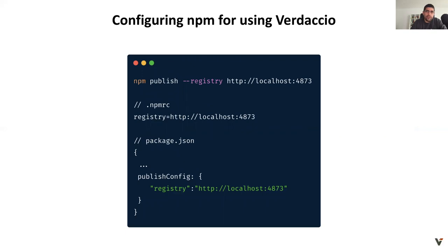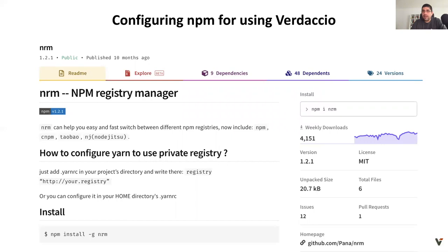The next step is configuration and setting a custom registry. There are three ways: the fastest is using the registry flag, which works per command. The second is setting the registry property in the .npmrc file — this is the most common way and is recognized by other package managers; you can host it in your OS home directory globally or in the root of your project. In package.json you can define the publishConfig property to ensure you're publishing to a specific registry, which cannot be overridden. A personal recommendation: nrm — this tool is handy for switching between registries.